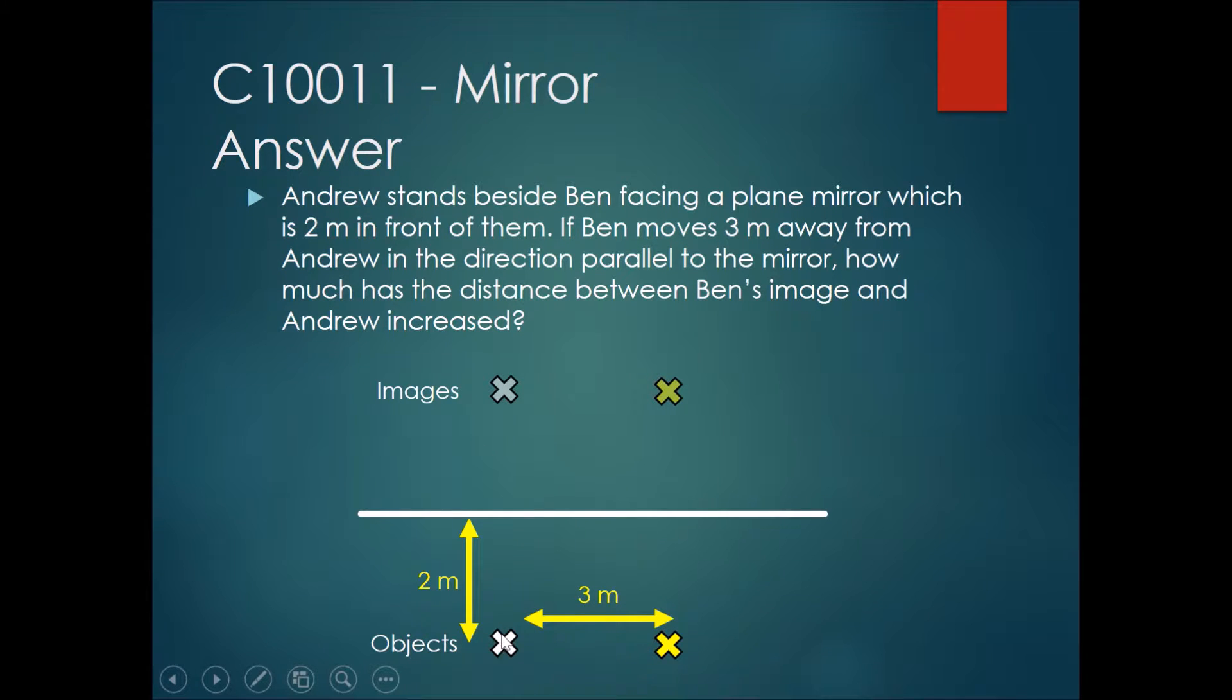Now we need to know the distance from Andrew's body to Andrew and Ben's image. He was 2 meters away from the mirror, and therefore the images would also be 2 meters away from the mirror's surface. And so the distance from Andrew's body to the images is actually 4 meters at the start.